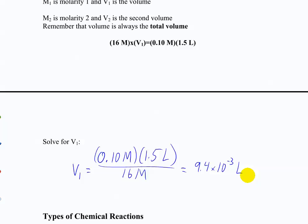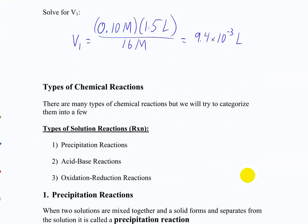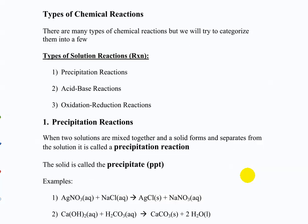For the time we have left, let's discuss chemical reactions. We're going to talk about three types of reactions. The first two you saw in lab last week; the third not so much yet. Those three types are: precipitation reactions, acid-base reactions, and oxidation-reduction (redox) reactions.